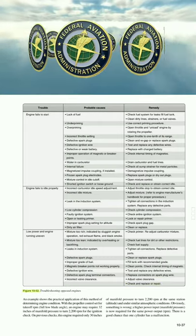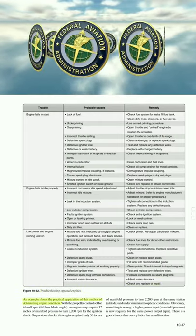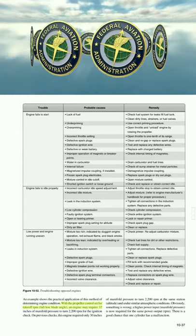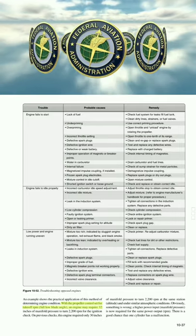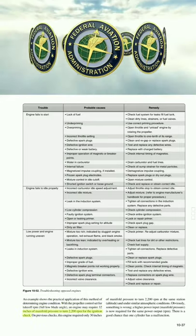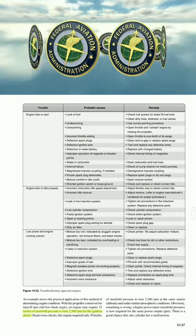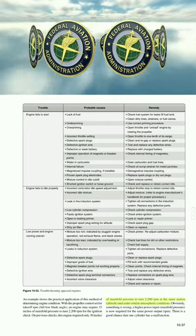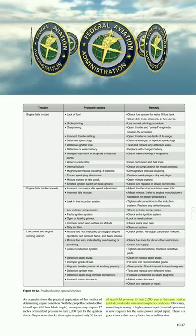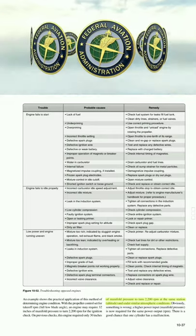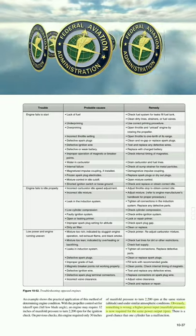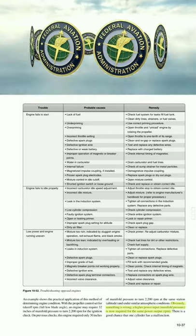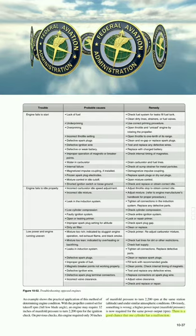An example of this method: with the propeller control set for takeoff RPM at full low blade angle, an engine may now require 32 inches of manifold pressure to turn 2200 RPM during the ignition check, whereas on previous checks it required only 30 inches under similar atmospheric conditions at the same station altitude. Obviously something is wrong — a higher power input is required for the same power output, suggesting one cylinder may have a malfunction.